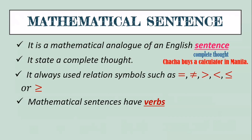Just like in a sentence where we have a verb, the same is true in a mathematical sentence — we also have a verb. In English, a verb is an action word; for example, in the sentence 'Cha-cha buys a calculator,' the word 'buys' is the action word. In a mathematical sentence, the action word is the relation symbol. For example: 3 plus 6 equals 9 — that is a complete thought, and the verb is the equal sign.